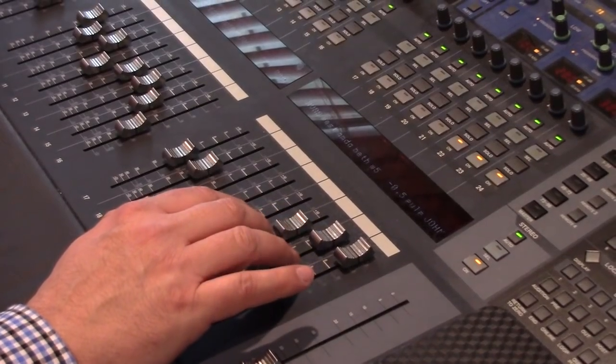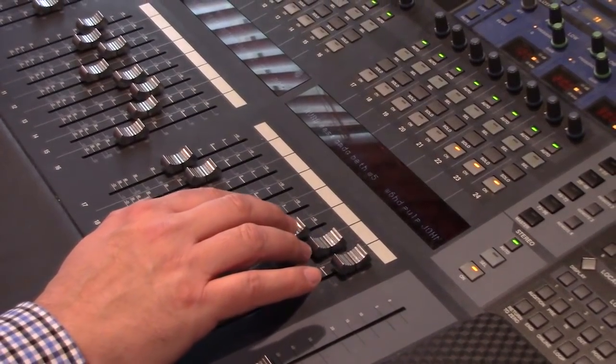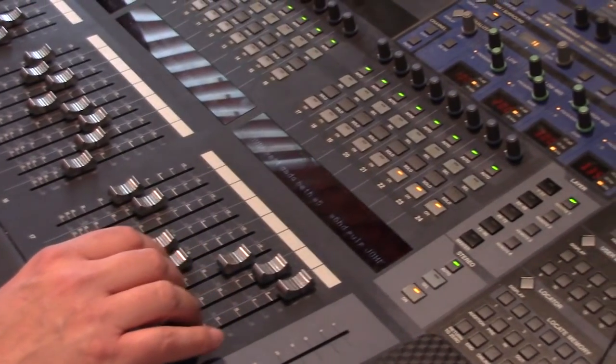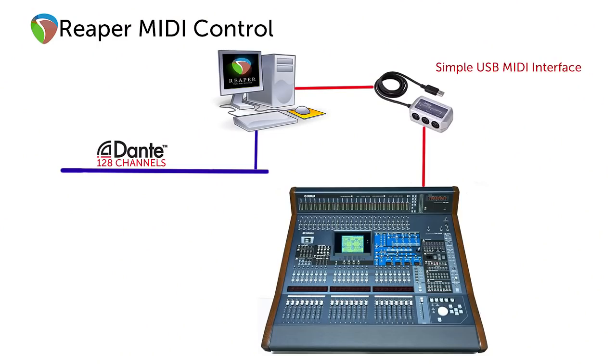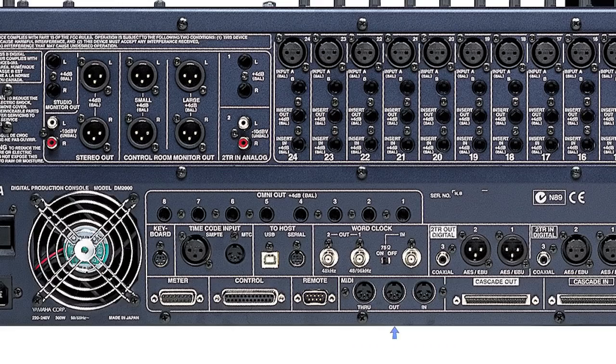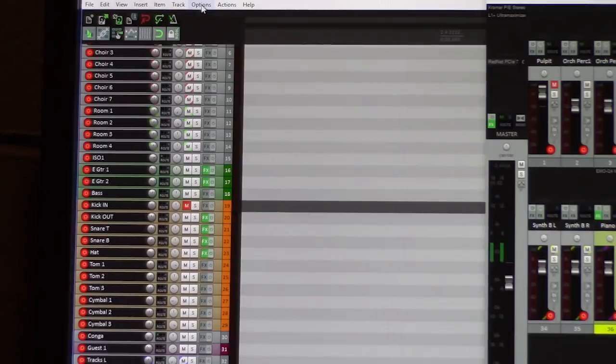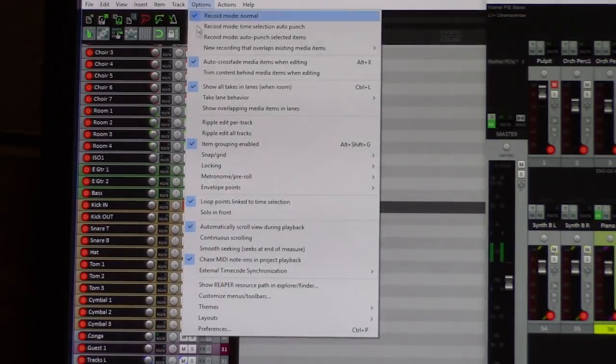One of the great things I've discovered about Yamaha digital mixing consoles is their MIDI integration. They have hooks into just about everything, which makes them great consoles to use as control surfaces for a DAW. In the DM2000, I've mapped all my faders, mute buttons, and pan knobs to MIDI control channels. I'm using a simple USB-to-MIDI device connected to the MIDI output of the DM2000 to get the MIDI into the computer.